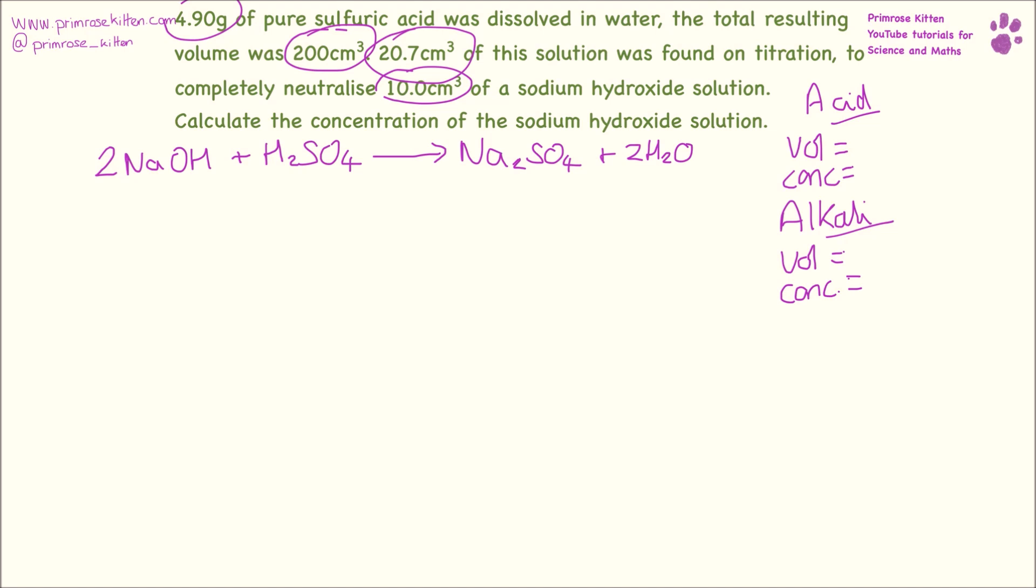So volume of acid we had that was used in the titration was 20.7. Concentration of acid was 4.9 grams in 200 centimeters cubed. Concentration of sodium hydroxide is the bit we're trying to work out, and the volume of sodium hydroxide was 10.0 centimeters cubed.